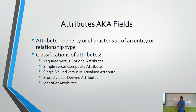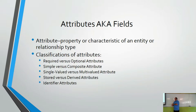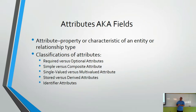There are different classifications of attributes. First, required versus optional: required means the data must be present when inserting into the entity; optional means it's not mandatory. For example, your date of birth and name are mandatory for a student profile, but a fax number is optional. Other classifications include simple versus composite, single-valued versus multi-valued, stored versus derived, and identifier attributes — all covered in detail shortly.